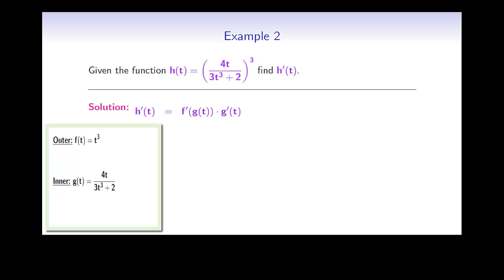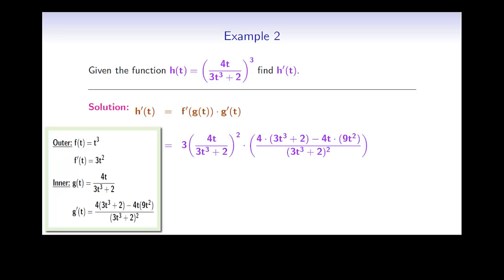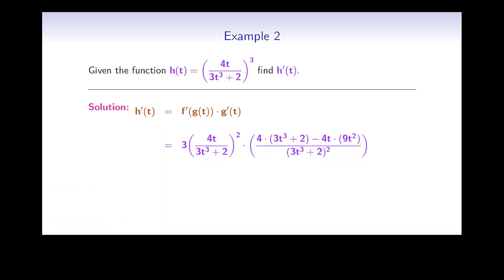Computing the derivatives, h prime of t is 3 times the quantity 4t divided by 3t cubed plus 2, squared, times the quantity 4 times (3t cubed plus 2) minus 4t times 9t squared, all divided by 3t cubed plus 2 quantity squared — using the quotient rule for the innermost function. After simplification, h prime of t is equal to 348t squared plus 576t to the fourth minus 1728t to the fifth, all divided by 3t cubed plus 2 to the fourth power.